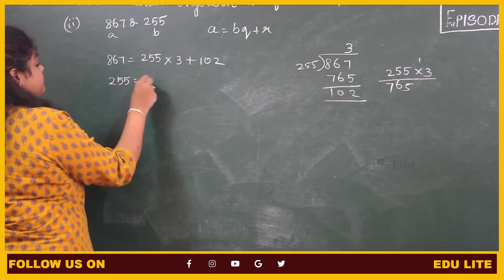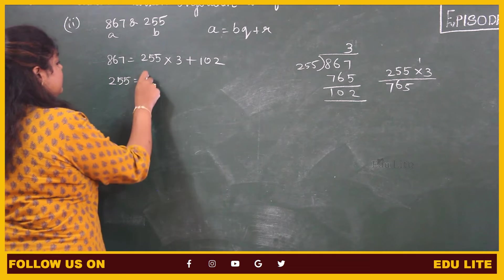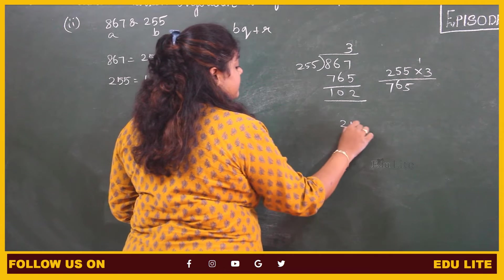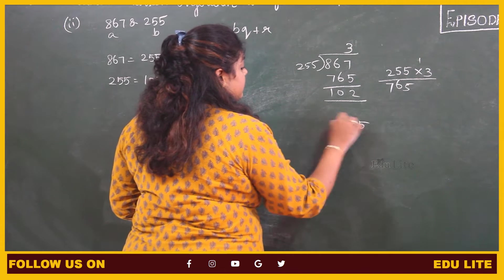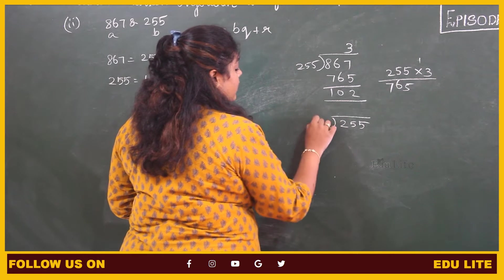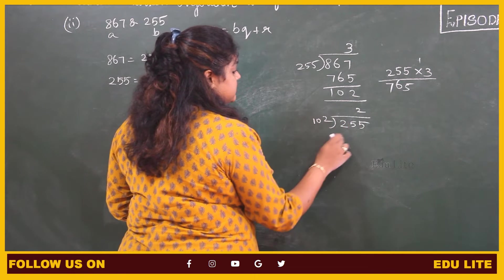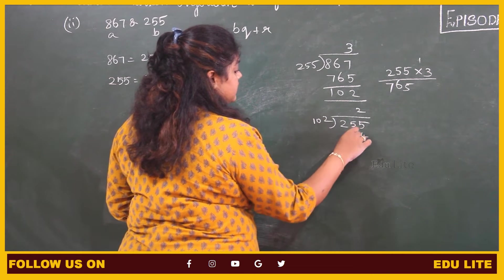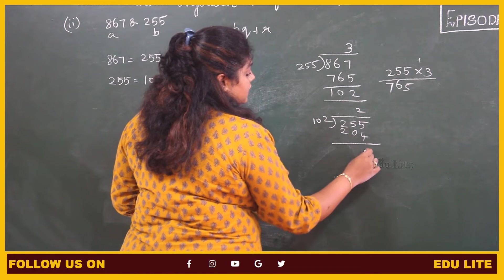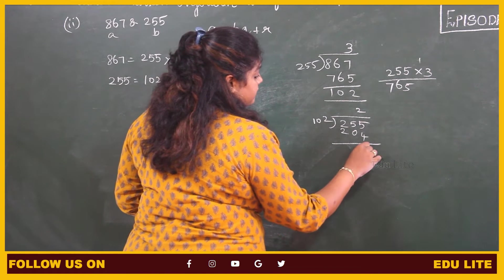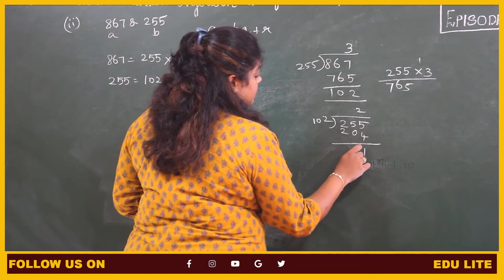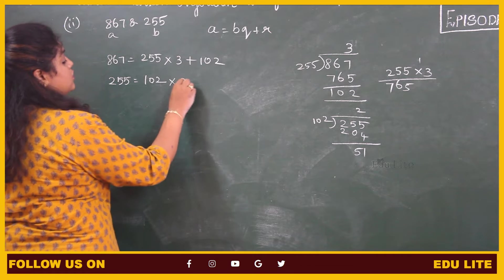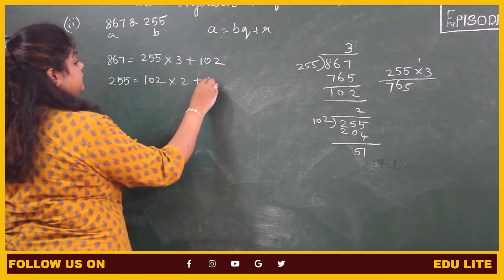The dividend is 255 and the divisor is 102. 255 divided by 102: 2 times gives 204, remainder 51. So 102 into 2 plus 51.